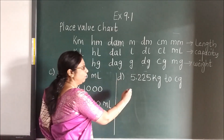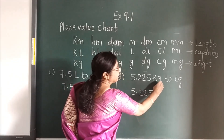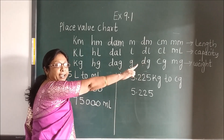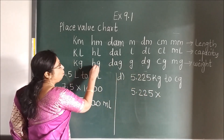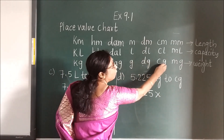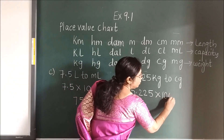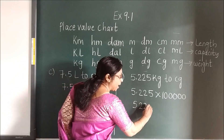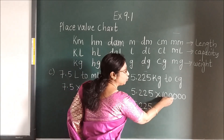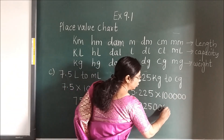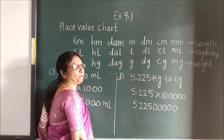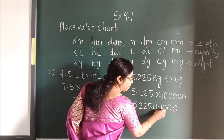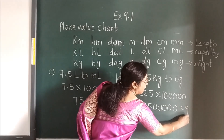Same thing here. You will write the number — KG to CG. Where is KG? Here. And CG is here. That means you are moving to the right side. Multiply. How many times? 1, 2, 3, 4, 5. So 1, 2, 3, 4, 5 zeros. When you multiply, you will write the number and add the number of zeros: 1, 2, 3, 4, 5. And after that you have to place the point. After the point, count how many numbers: 1, 2, 3. So after 3 numbers you are going to place the point.